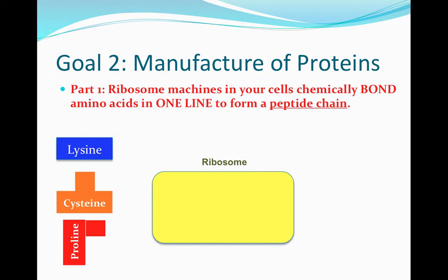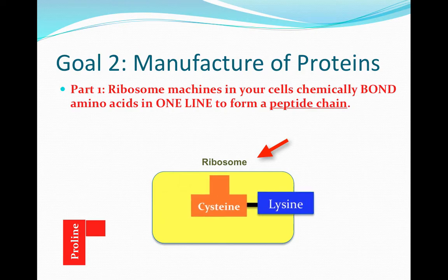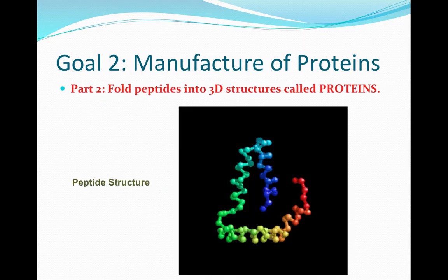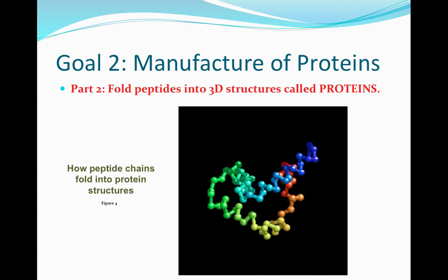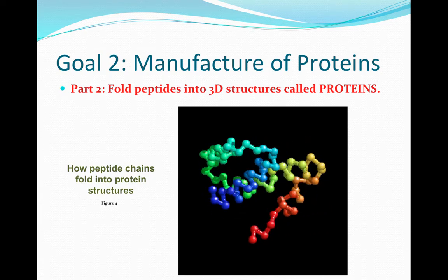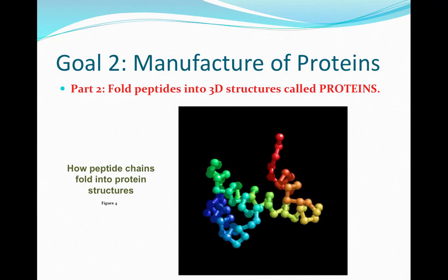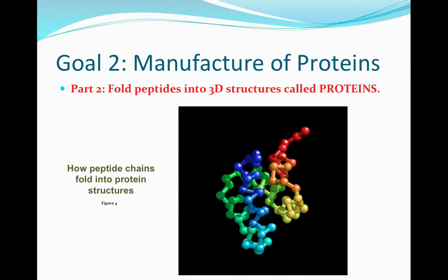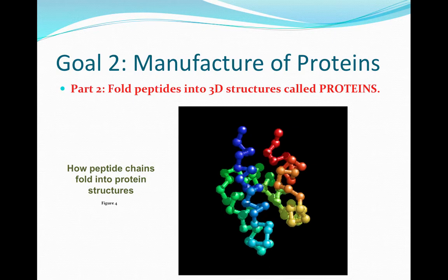In the first stage, an organelle in the cell called a ribosome takes each amino acid and connects them in a line to form what's called a peptide chain. The peptide chains are then folded into a 3D structure called proteins. In this diagram here, you can see a collection of amino acids that have been bonded together to form a peptide chain. You can see how the peptide chain is folded left, right, up, and down to create a three-dimensional structure called a protein, which has specific properties based on that 3D structure.